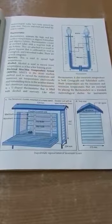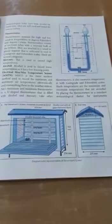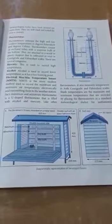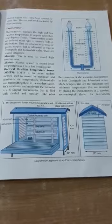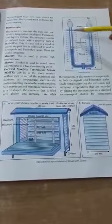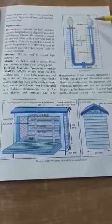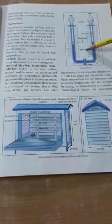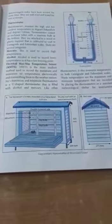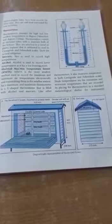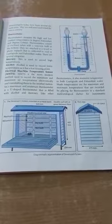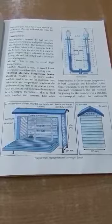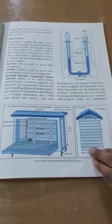MMTS is the more modern method used to record the maximum and minimum air temperatures electronically and transmitting them to the weather station. Six's maximum and minimum thermometer is a U-shaped thermometer that is filled with alcohol and mercury. Like other thermometers, it also measures temperature in both centigrade and Fahrenheit scales. Shade temperatures are the maximum and minimum temperatures that are recorded by placing the thermometers in a standard meteorological shelter for instruments called Stevenson's screen.